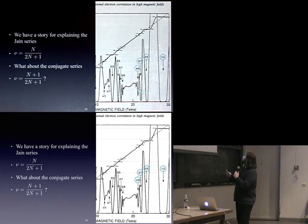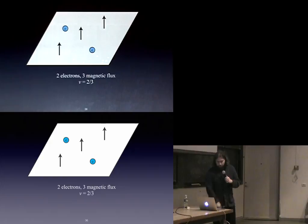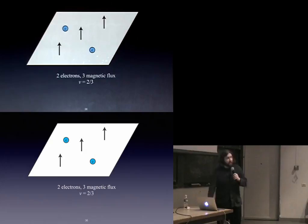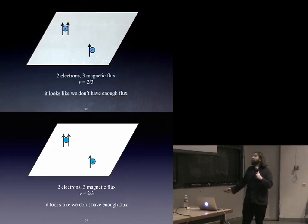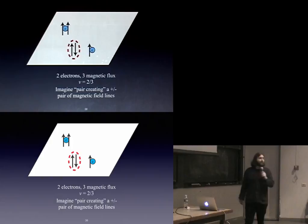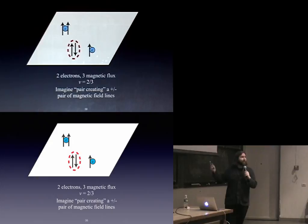That tells us about the Jain sequence states. But what about the other states — the conjugate sequence? Let's try two-thirds: in one small region I have two electrons and three magnetic field lines. What happens if I try to gobble up all the field lines? I don't have enough — I ran out. So we're going to kind of pictorially cheat. If I have a region where there are no field lines, I can think of it as a region with an up field line and a down field line right next to each other — pair-creating a plus and minus pair of magnetic field lines.